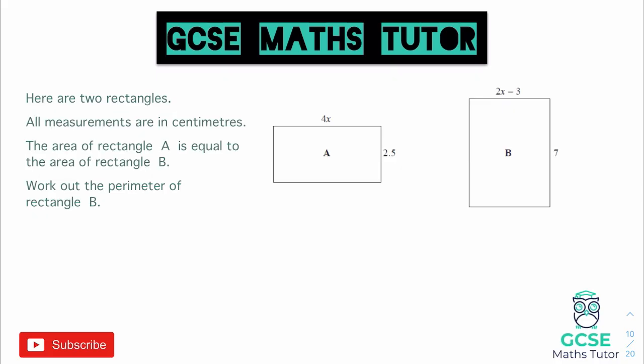Okay, so looking at this question, it says here are two rectangles and we can see the two rectangles with some algebraic and numerical lengths. It says all measurements are in centimeters, and the area of rectangle A is equal to the area of rectangle B. Work out the perimeter of rectangle B.